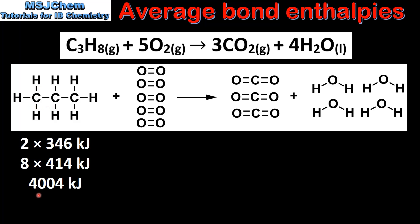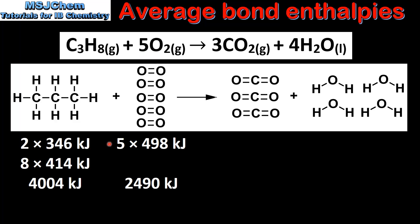This gives a total of 4004 kJ. Next, the oxygen — in the balanced chemical equation we have 5 moles of oxygen, so we need to multiply the bond enthalpy value for the oxygen-to-oxygen double bond by 5, which gives us 2490 kJ.